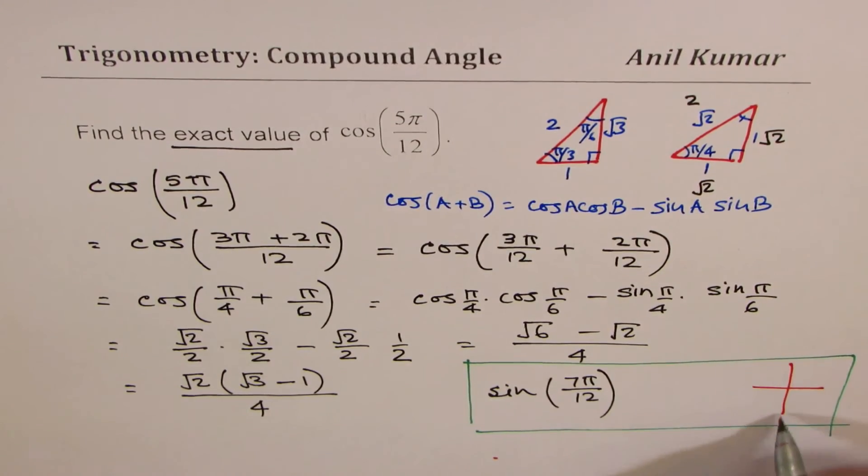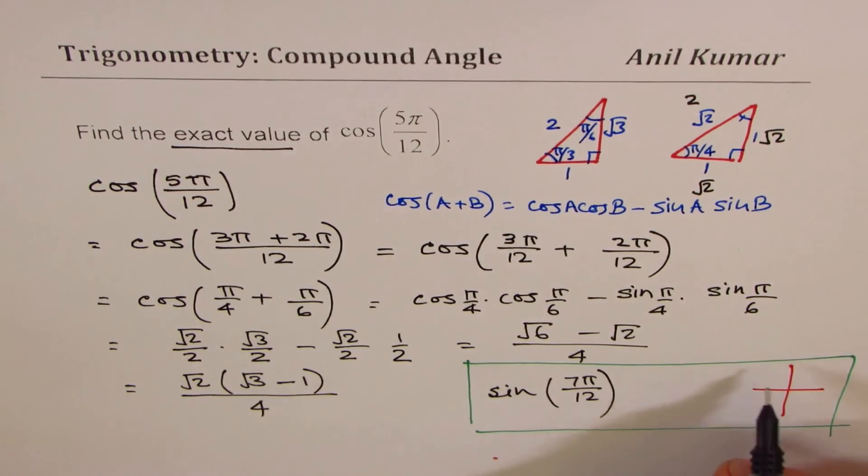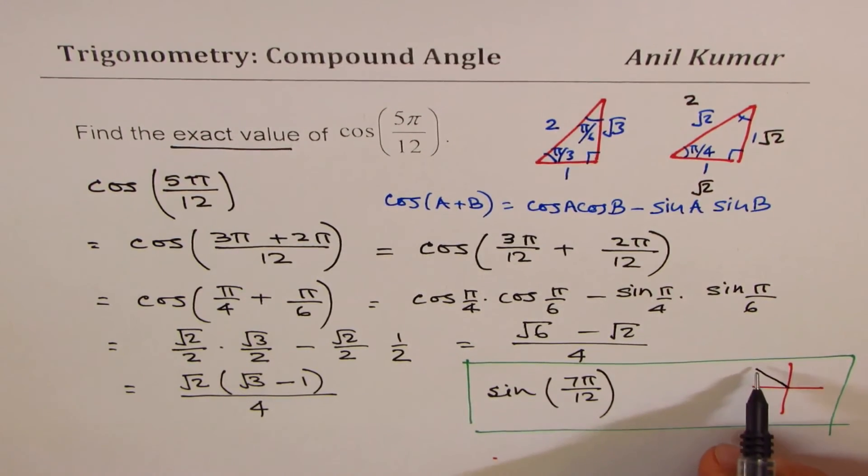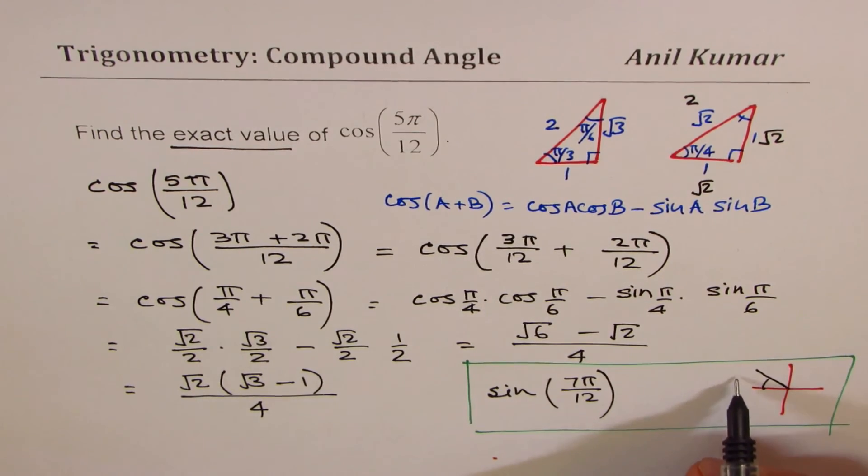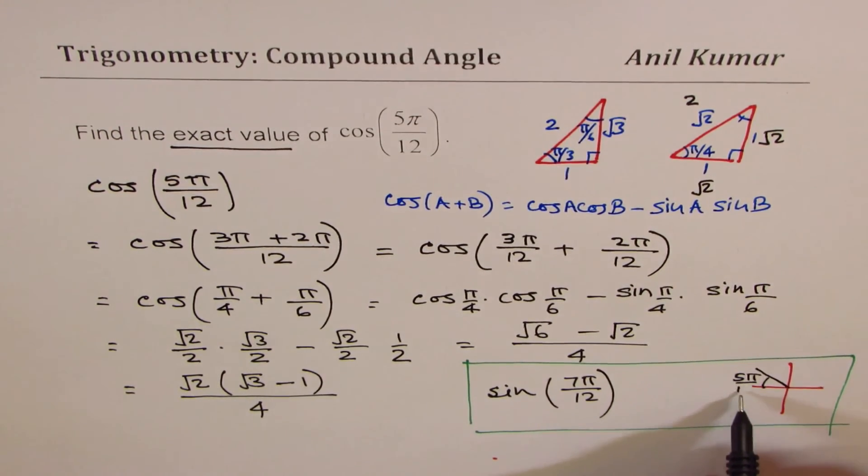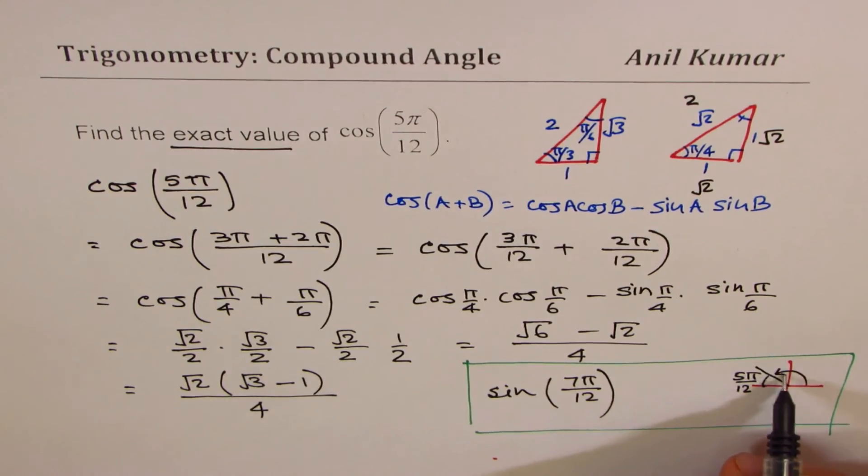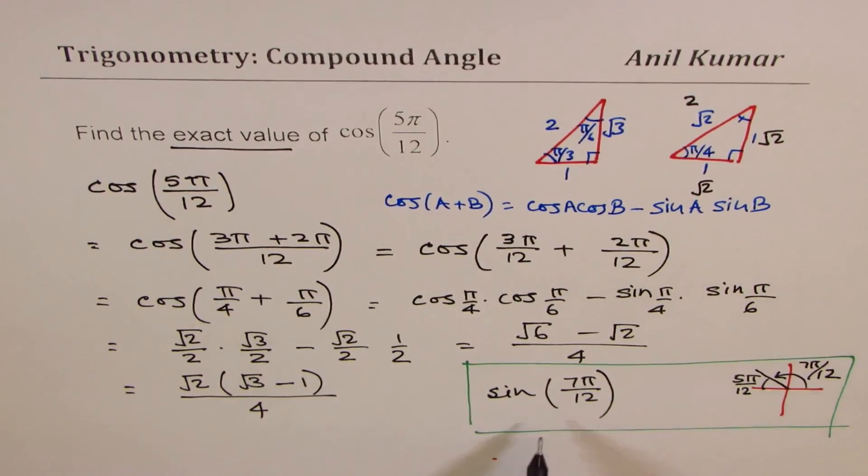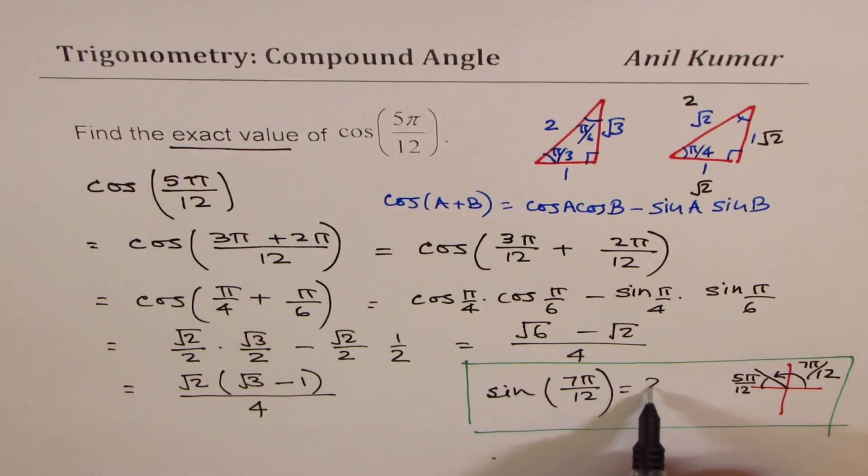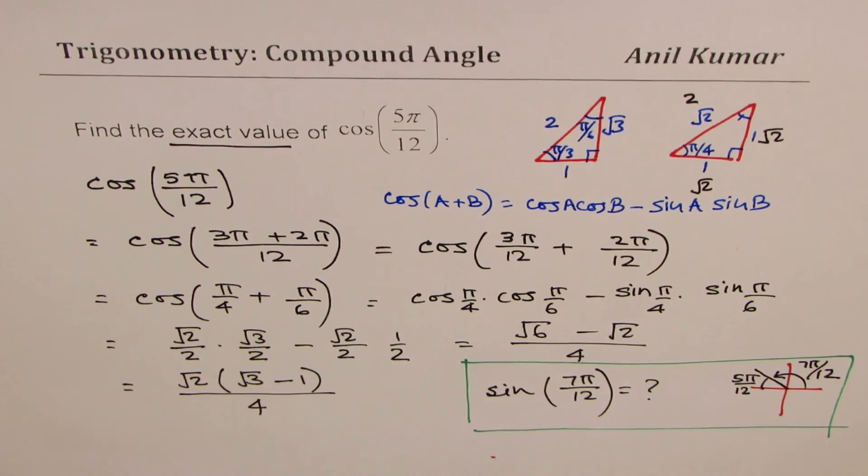Now look here. 7π/12 really means that we are now in this quadrant and the acute angle still is 5π/12. Does it make sense to you? This is 7π/12. Great. So find out what this is. I hope that helps.